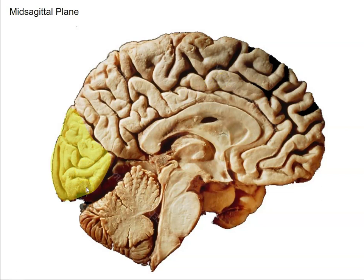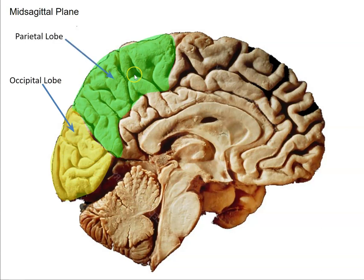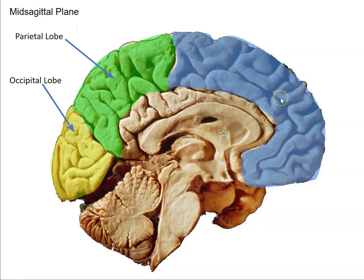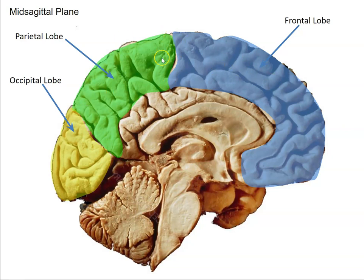Back here you have the occipital lobe. The sulcus called the occipital-parietal sulcus separates the occipital lobe from the parietal lobe. Next up is the frontal lobe. Here is the medial part of the central sulcus, which separates the frontal lobe and the parietal lobe — you saw that on the lateral and dorsal views of the human brain. And this is what you can see of the temporal lobe from this medial view.